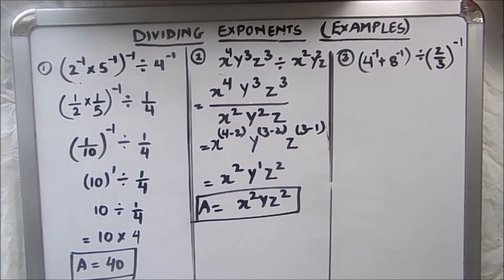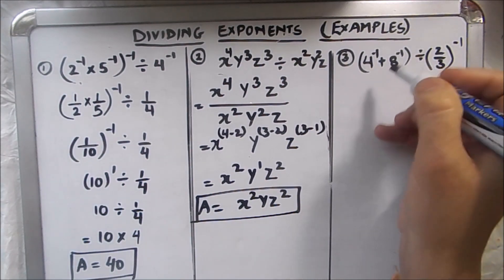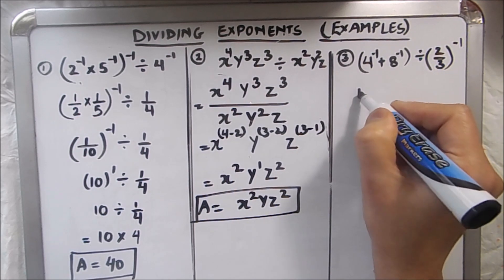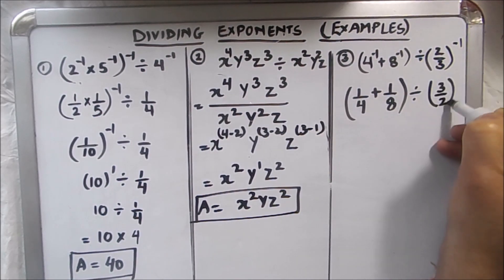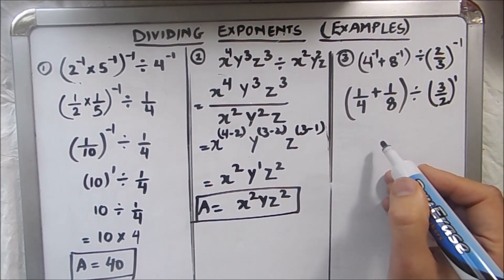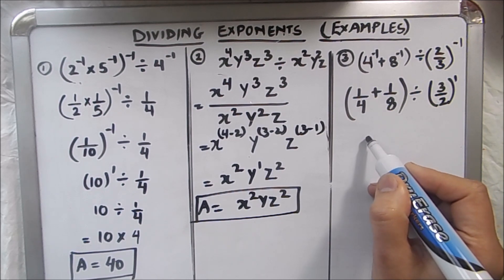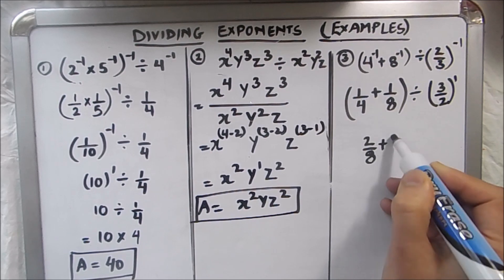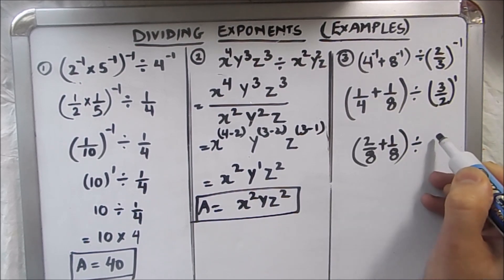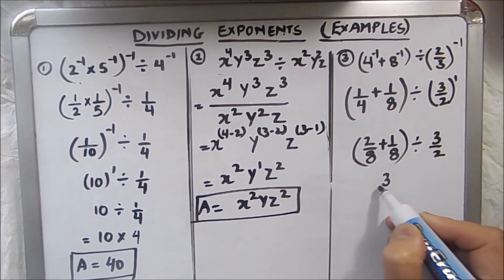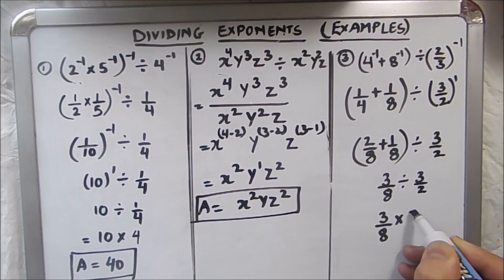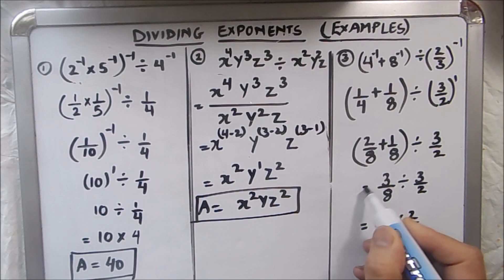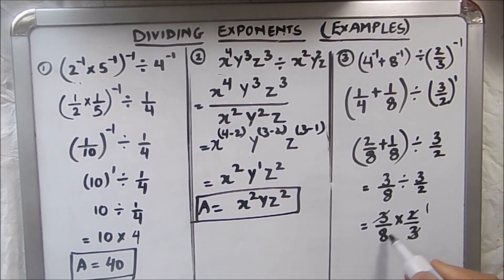Now let's move to the next example. We apply the negative exponent rule, giving us 1 over 4 plus 1 over 8, divided by 3 over 2. Now we add the two fractions: 1 over 4 becomes 2 over 8, so we get 2 over 8 plus 1 over 8, which is 3 over 8, divided by 3 over 2. This equals 3 over 8 times 2 over 3. The 3s cancel, leaving 2 over 8, which simplifies to 1 over 4. So our final answer is 1 fourth.